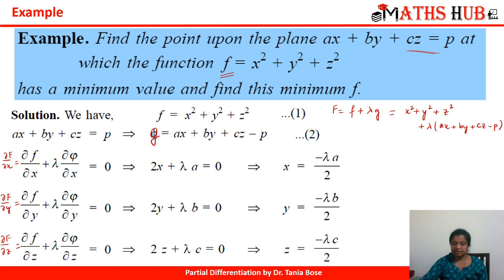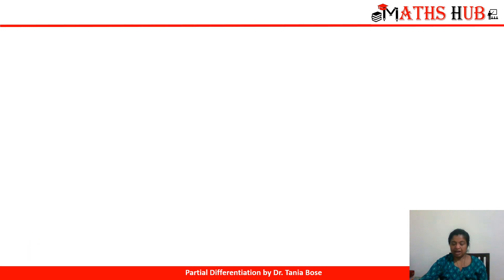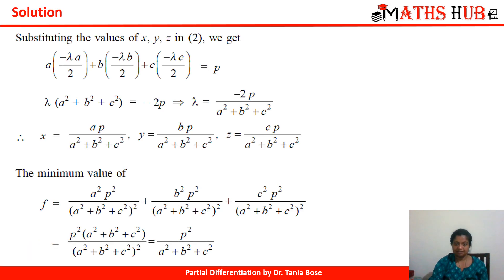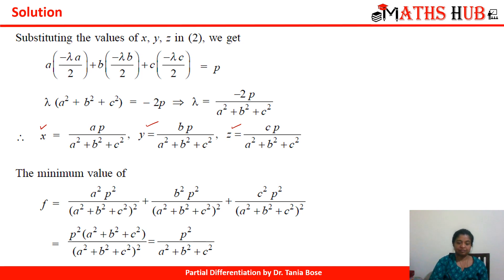Using these expressions, we substitute x, y, z into the given constraint ax + by + cz = p and find the value of λ. Lambda turns out to be −2p/(a² + b² + c²). Substituting back, we get the point (x, y, z), which is the point of minima — no further check is needed. The minimum value of the function, found by substituting x, y, z into x² + y² + z², is p²/(a² + b² + c²).